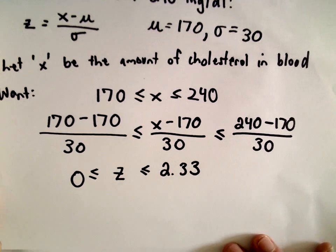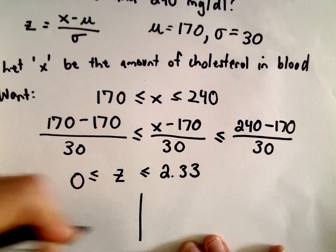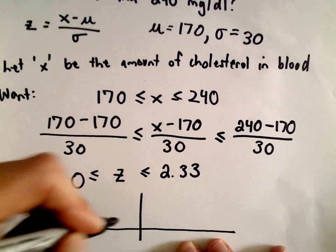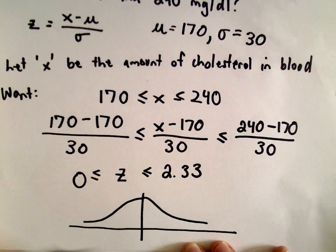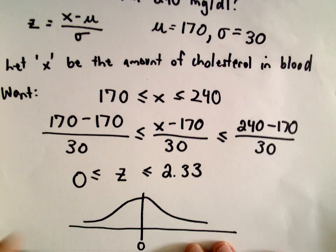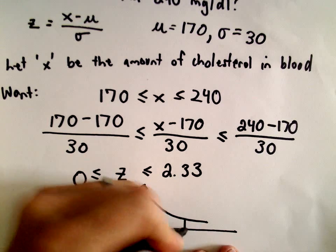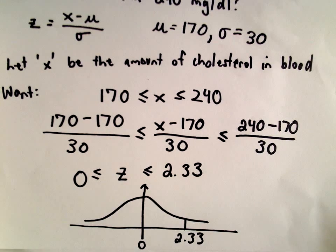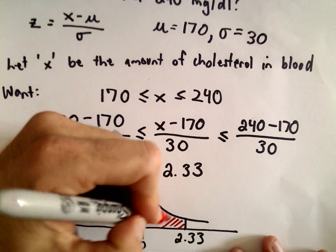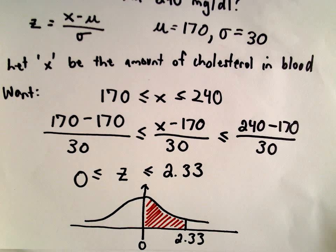If we think about it in terms of the area underneath the standard normal curve, the z-score of zero corresponds to the y-axis, and here is the z-score of 2.33. The area we're interested in is the shaded area between these two z-scores, and that shaded area gives us the probability.